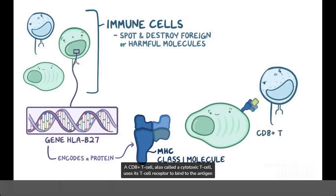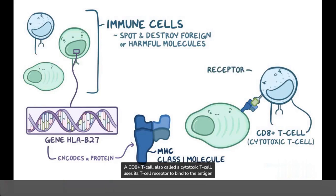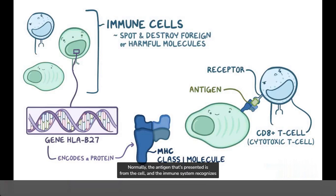A CD8 positive T cell, also called a cytotoxic T cell, uses its T cell receptor to bind to the antigen presented by the MHC class 1 molecule. Normally, the antigen that's presented is from the cell, and the immune system recognizes it as a harmless self-antigen, which leads to no response.